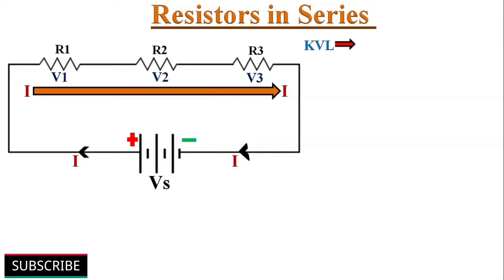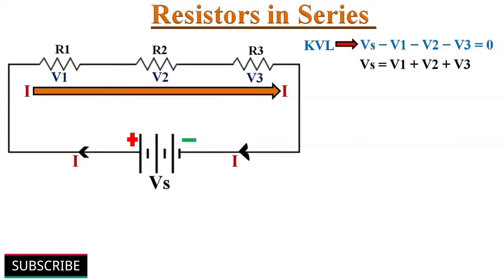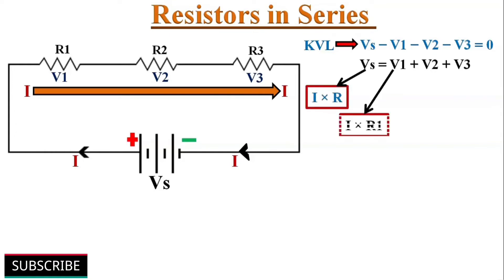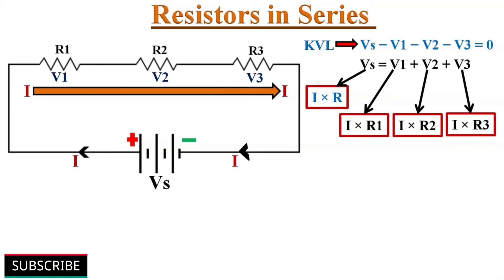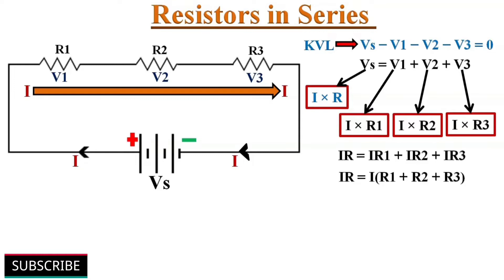Here we can apply Kirchhoff's voltage law: the algebraic sum of the voltages around any closed loop is equal to zero. That means Vs minus V1 minus V2 minus V3 equals zero, which we can rewrite as Vs equals V1 plus V2 plus V3. According to Ohm's law, Vs equals I×R, V1 equals I×R1, V2 equals I×R2, and V3 equals I×R3. Substituting these values gives IR equals IR1 plus IR2 plus IR3. Since I is common, IR equals I×(R1 plus R2 plus R3). Dividing both sides by I, we get R equals R1 plus R2 plus R3.